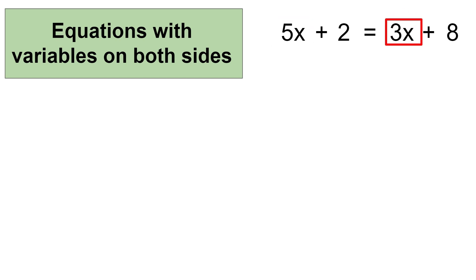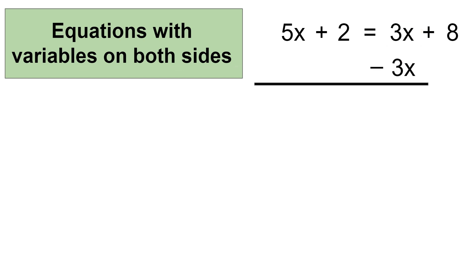How do you remove 3x? Well, you'll notice that the coefficient 3 is positive. So in order to remove the variable term 3x, I'll need to use the opposite operation, which is subtraction. So to remove 3x from the right side of the equal sign, I'm going to subtract 3x from the right side. And 3x minus 3x equals 0, which completely removes 3x from the right side of the equal sign.